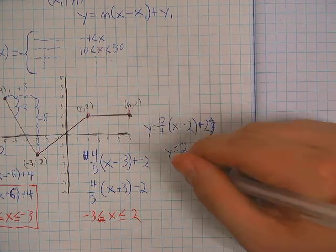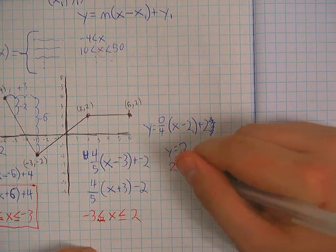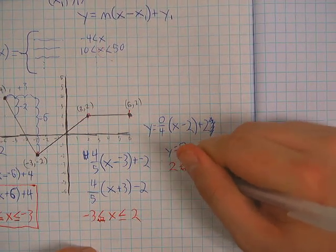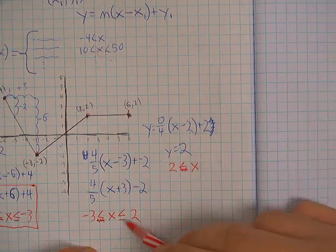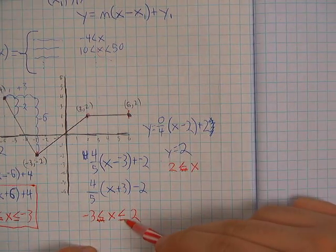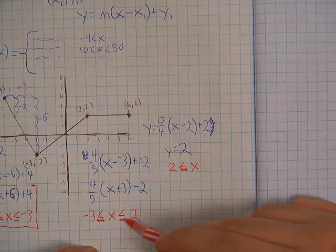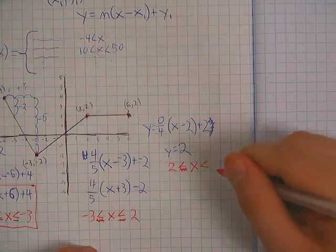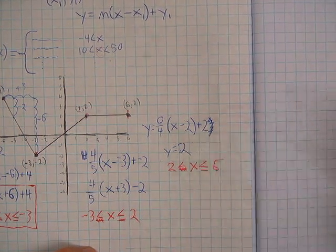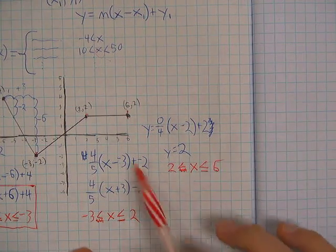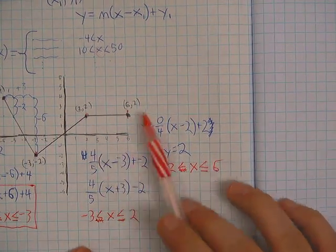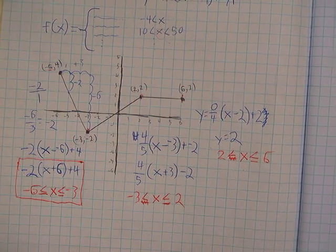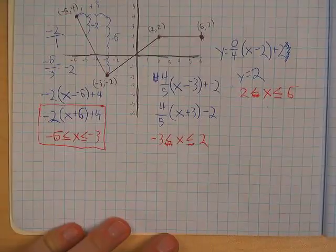This equation is for the segment that goes from two to six. We don't want to include x equals two again, so the domain is two is less than x which is less than or equal to six. Now I just need to put it all together in piecewise notation.